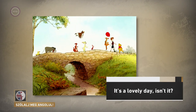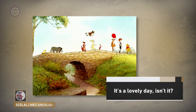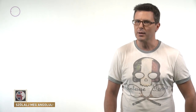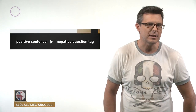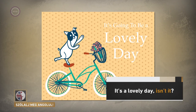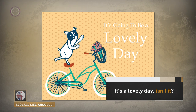We looked at mini-questions — question tags, didn't we? We saw how we normally add a question tag to the end of a sentence. It's a lovely day, isn't it? When we use question tags, we have to be careful of one thing. If the sentence is positive, we use a negative question tag, like this: 'It's a lovely day, isn't it?' In that example, the sentence is positive and the question tag, 'isn't it', is negative.